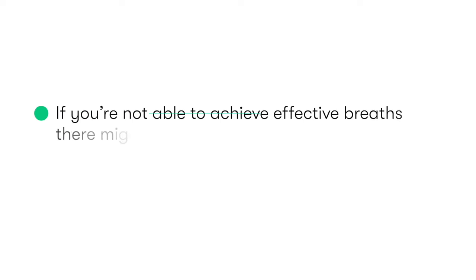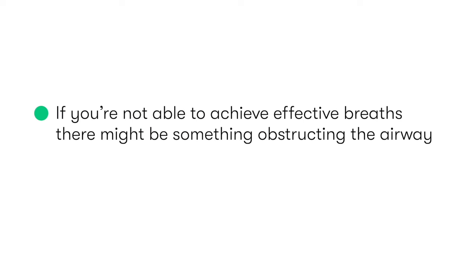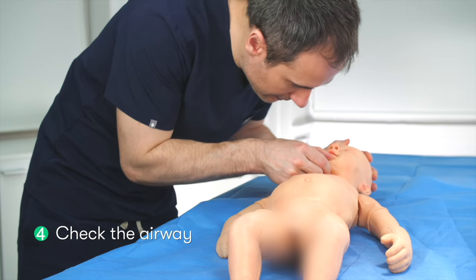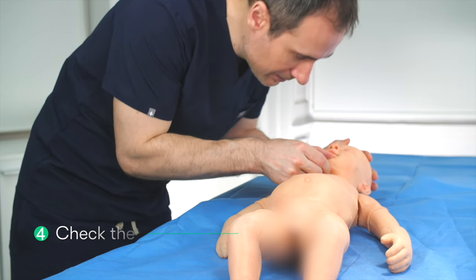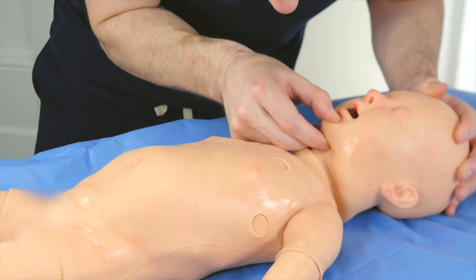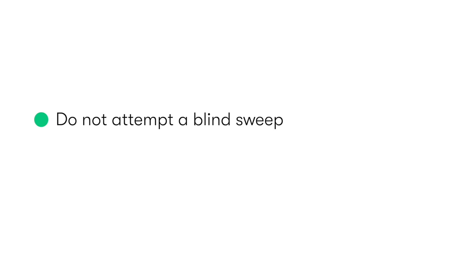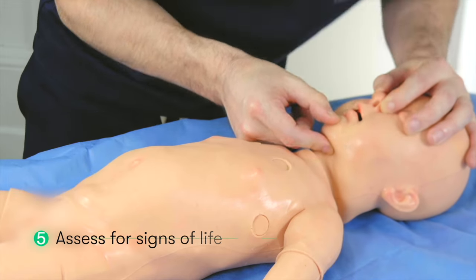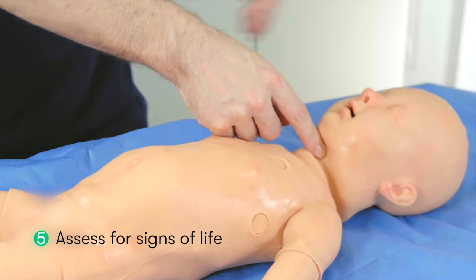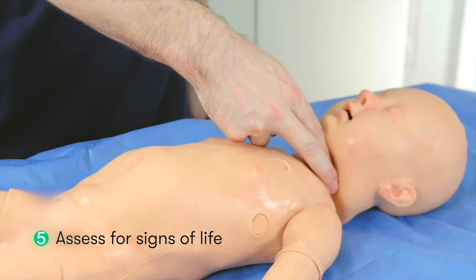If you're having difficulty achieving effective breaths, then there may be something obstructing the airway. Whilst maintaining head tilt chin lift, gently and carefully inspect the mouth, and if something is visible then attempt to remove it. However, do not attempt a blind sweep. Having performed five effective breaths, or having attempted five breaths, we assess for signs of life.